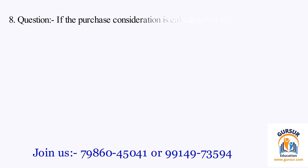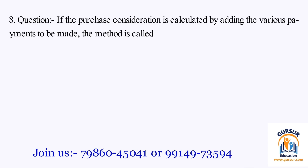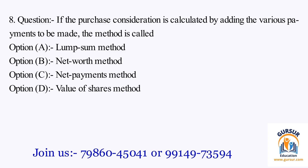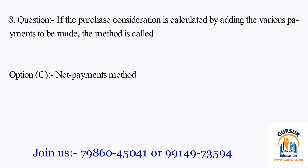Question number 8. If the purchase consideration is calculated by adding the various payments to be made, the method is called: The option A is Lumpsum method. The option B is Net Worth method. The option C is Net Payments method. The option D is Value of Shares method. The right answer is Option C, that is Net Payments method.